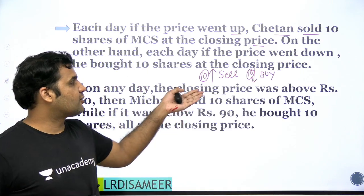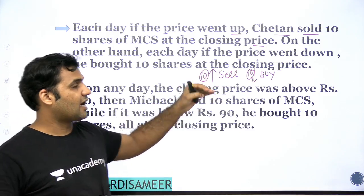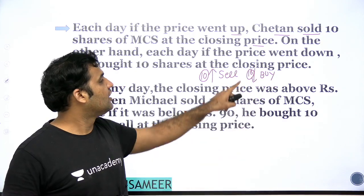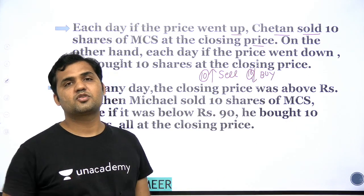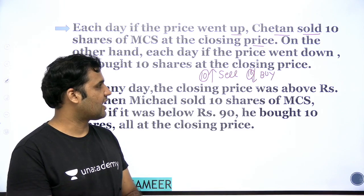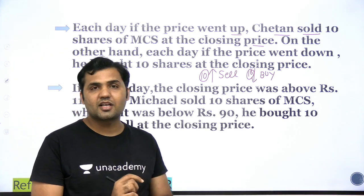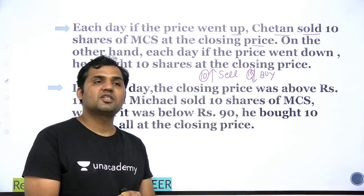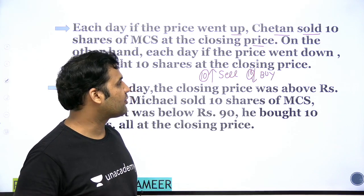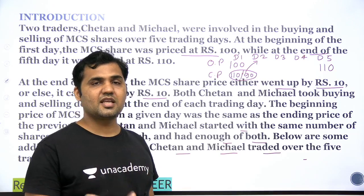To reiterate: if the price goes up by 10 rupees on any day, Chetan will sell. If the price goes down, Chetan will buy. He buys 10 shares at the closing price. Also keep in mind that every day, the price either goes up by 10 or goes down by 10 — these are the only two possibilities for the stock price movement each day.